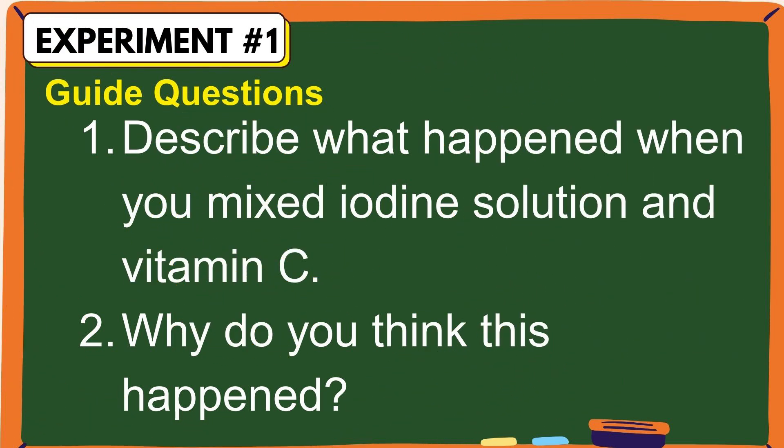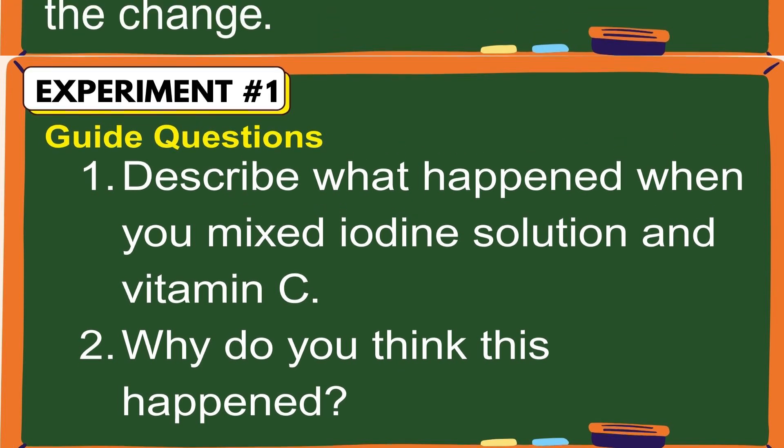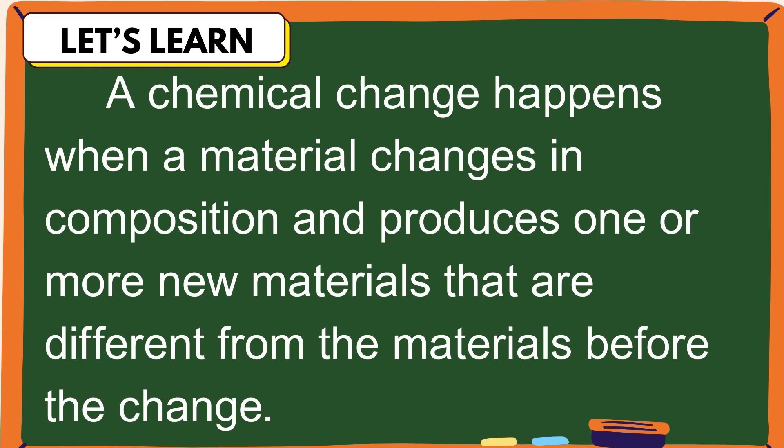Answer the guide questions in your notebook. A chemical change happens when a material changes in composition and produces one or more new materials that are different from the materials before the change.